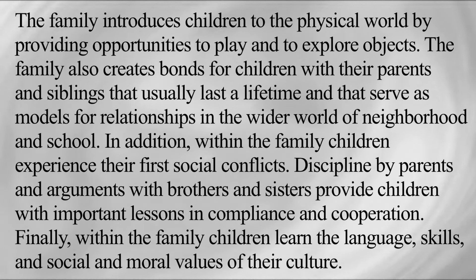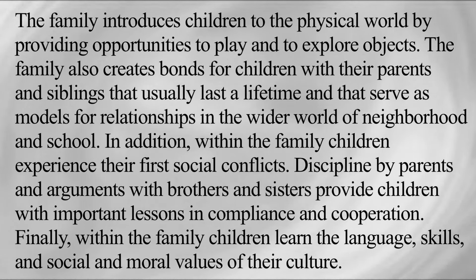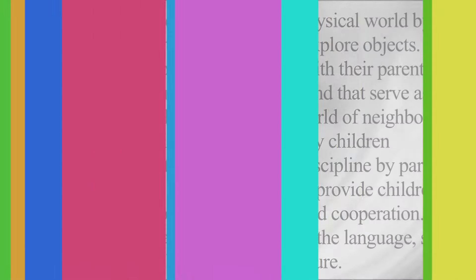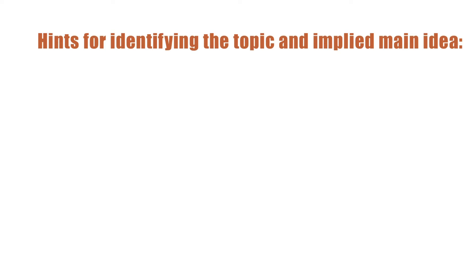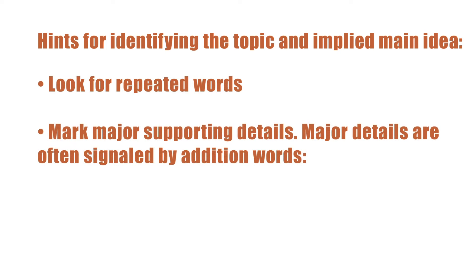The main point, then, is that the family has a profound effect on the lives of children. Here are hints to keep in mind for identifying the topic and implied main idea. First of all, look for repeated words. In the passage just considered, the words 'family' and 'children' appeared in almost every sentence.